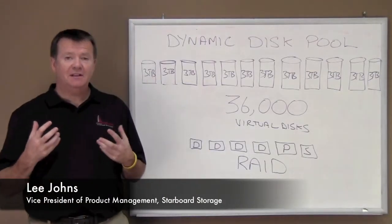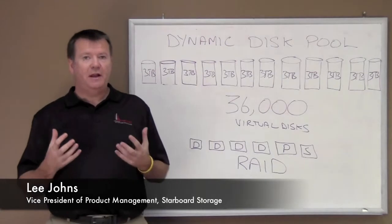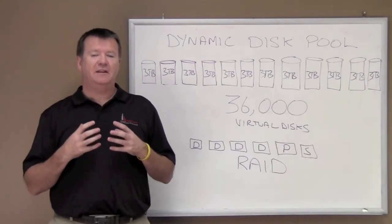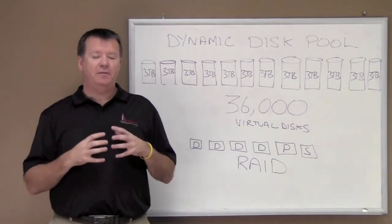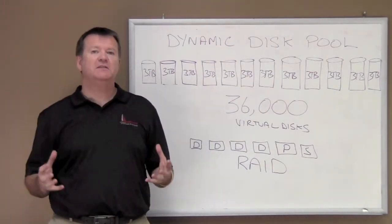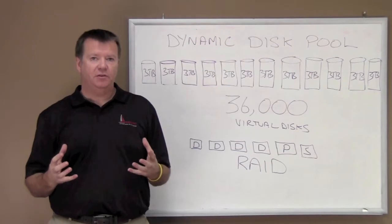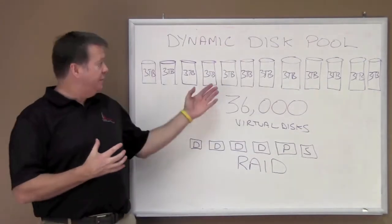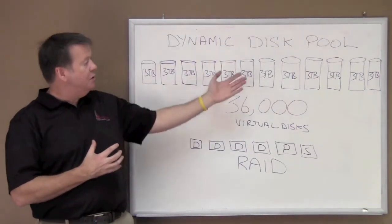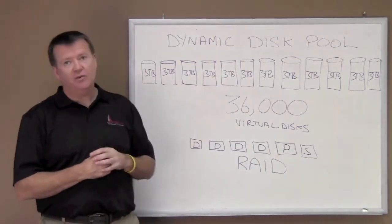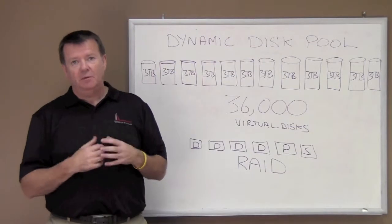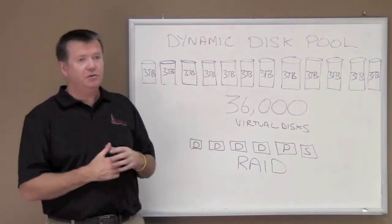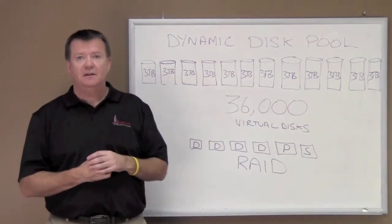The Starboard Dynamic Disk Pool is very powerful and it enables you to get benefit out of the entire space that's on the system. For instance, if we had 12 3TB drives, we'd be splitting those down into 36,000 virtual disks.